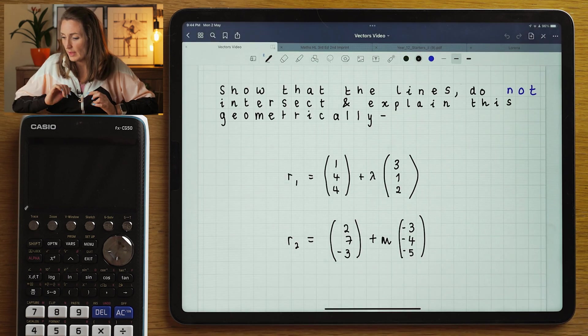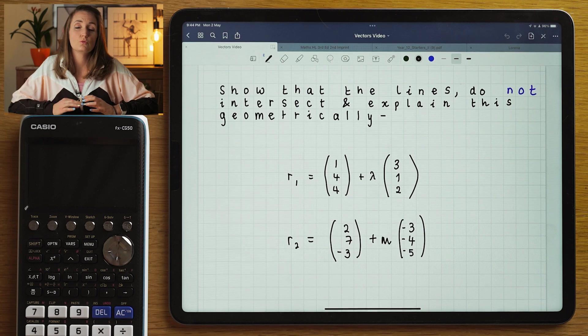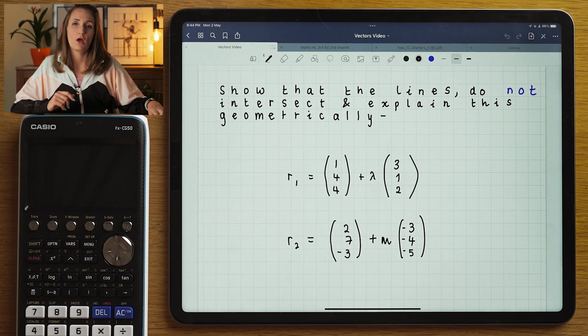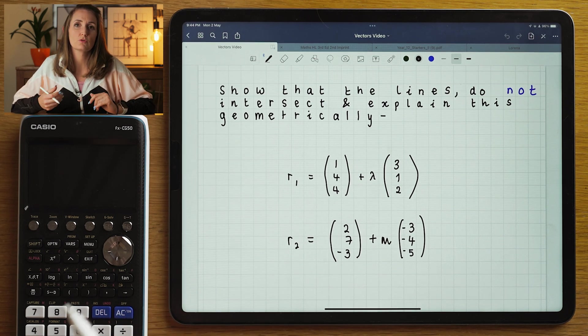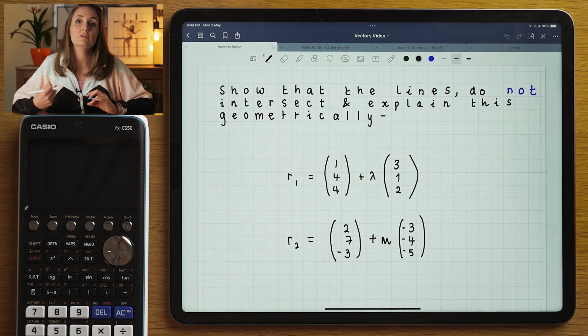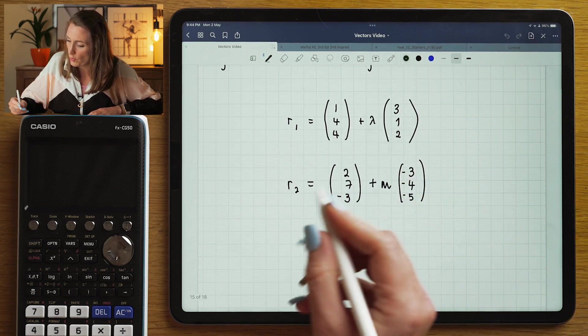So in your exam, you can be asked to prove that the lines do not intersect, which can be a bit tricky. What you're going to do is you're going to use exactly the same process that we talked about in the other video that they would in fact intersect.